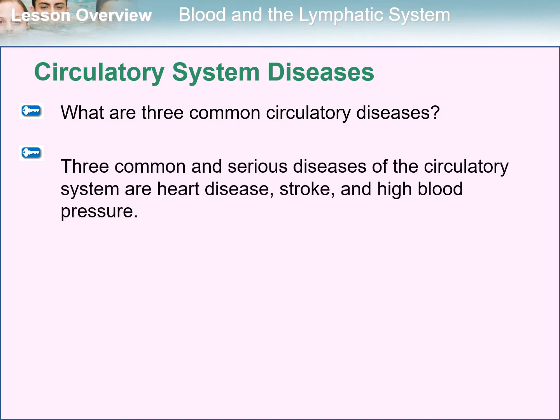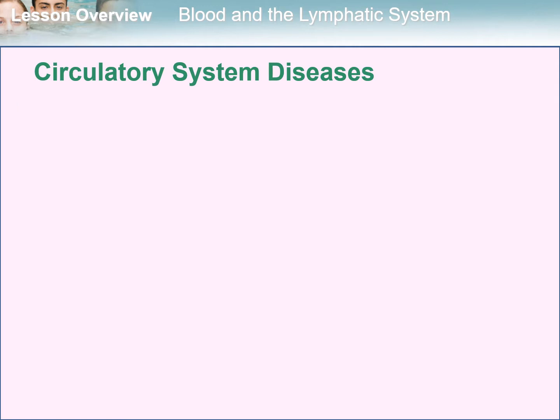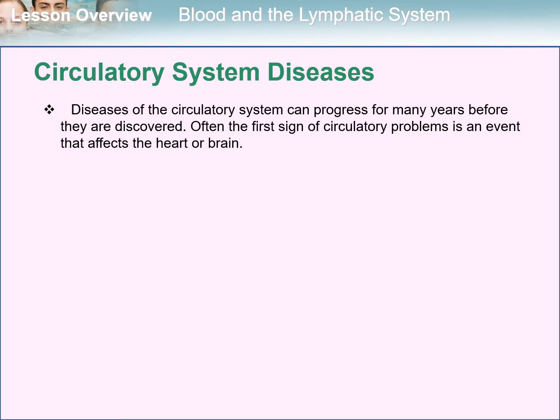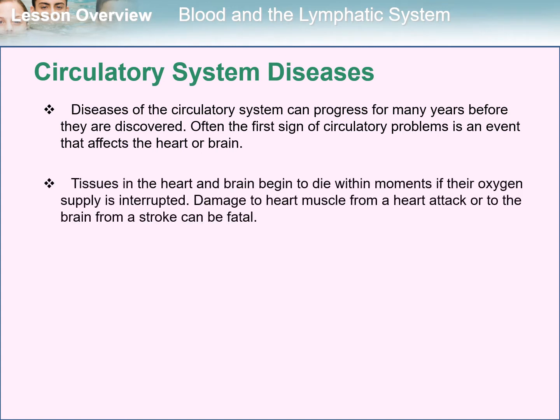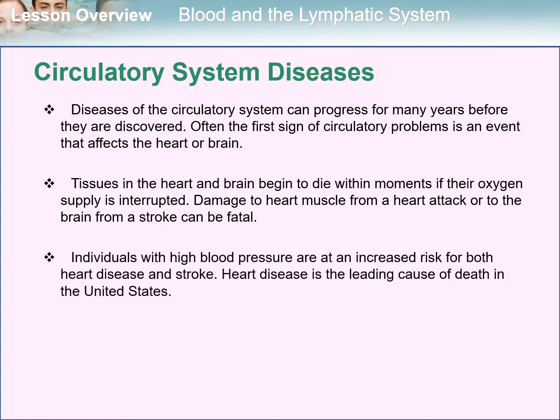The three common and serious diseases of the circulatory system are heart disease, stroke, and high blood pressure. Diseases of the circulatory system can progress for many years before they are discovered. Often the first sign of circulatory problems is an event that affects the heart or the brain. Tissues in the heart and brain begin to die within moments if their oxygen supply is interrupted. Damage to heart muscle from a heart attack or to the brain from a stroke can be fatal. Individuals with high blood pressure are at increased risk for both heart disease and stroke. Heart disease is the leading cause of death in the United States.